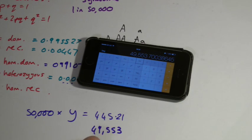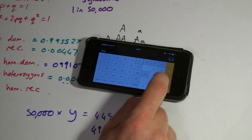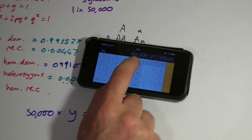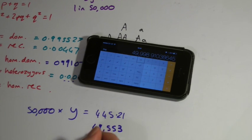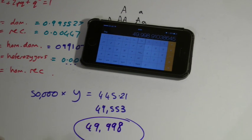Let's see what happens if I add that to 445.21. 49,998.9. Why is that significant? Because that was my total population.